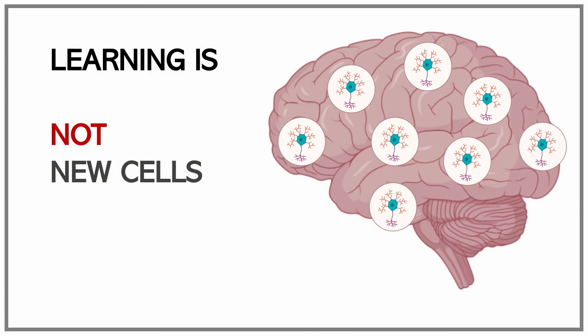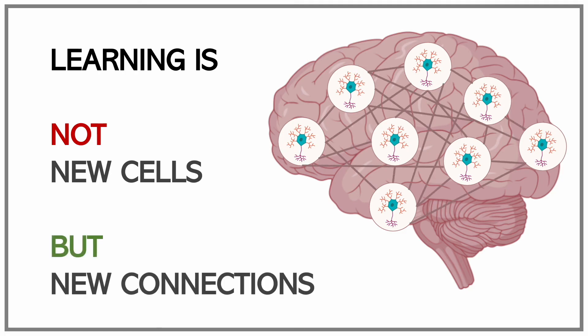Thus, when we learn something new, our brains do not produce new cells, but rather the brain creates new and mostly more efficient connections between neurons in different areas of the brain.